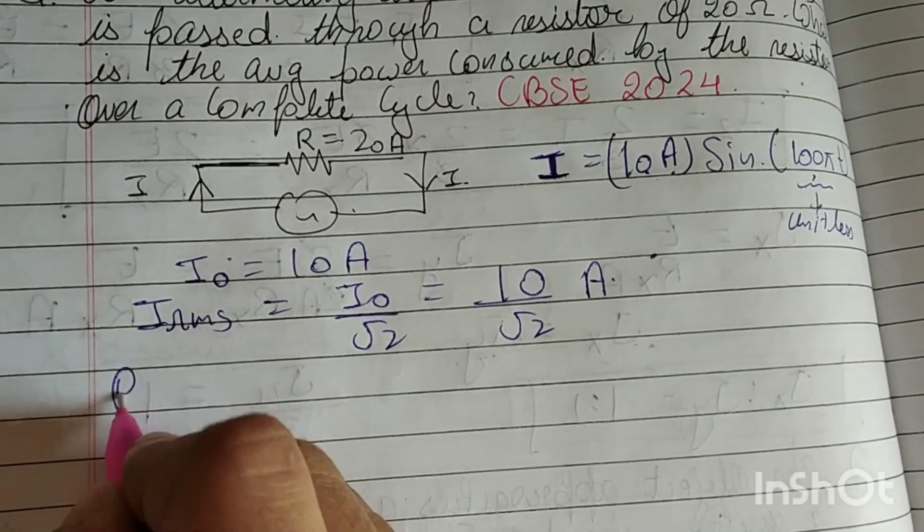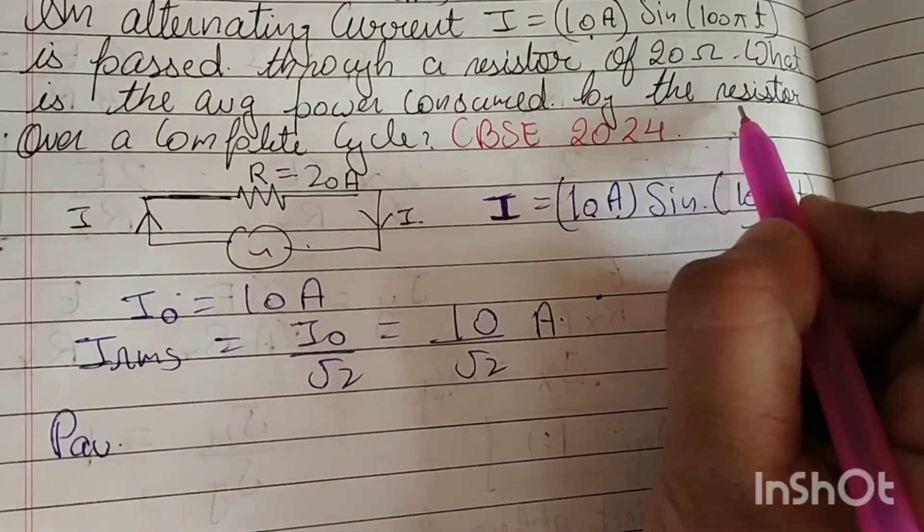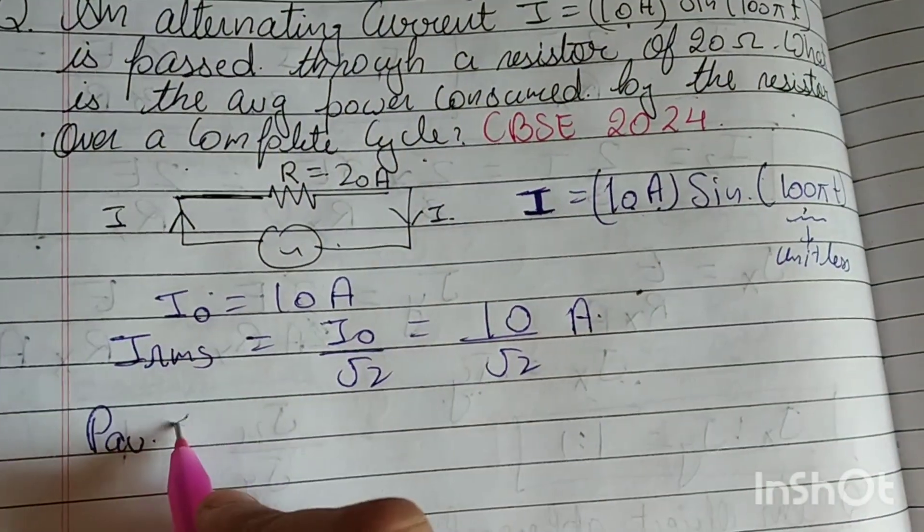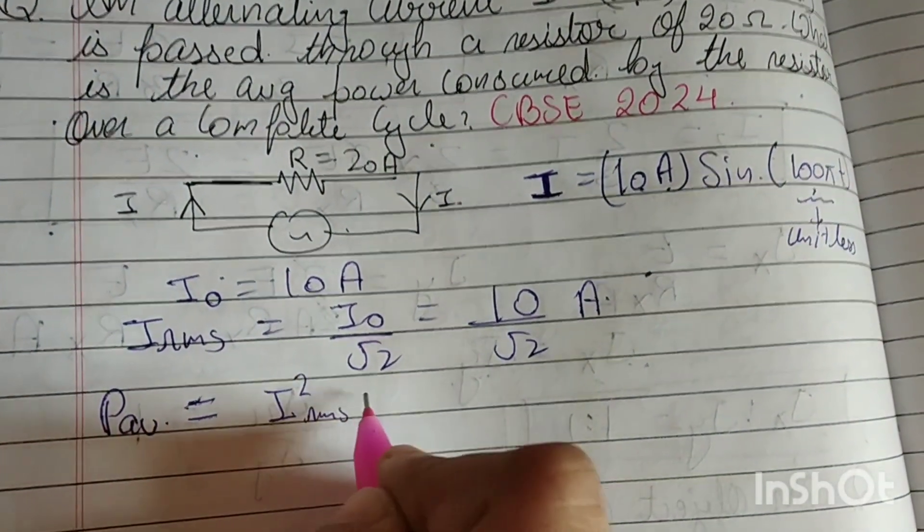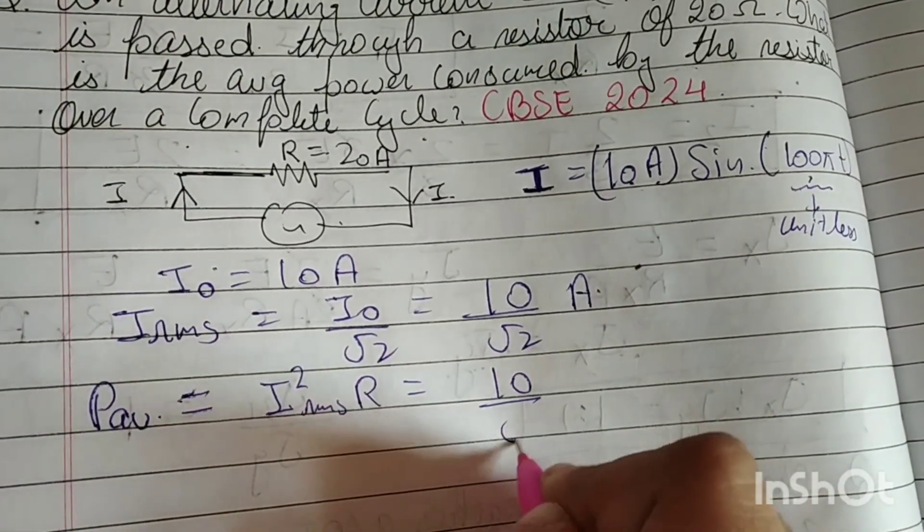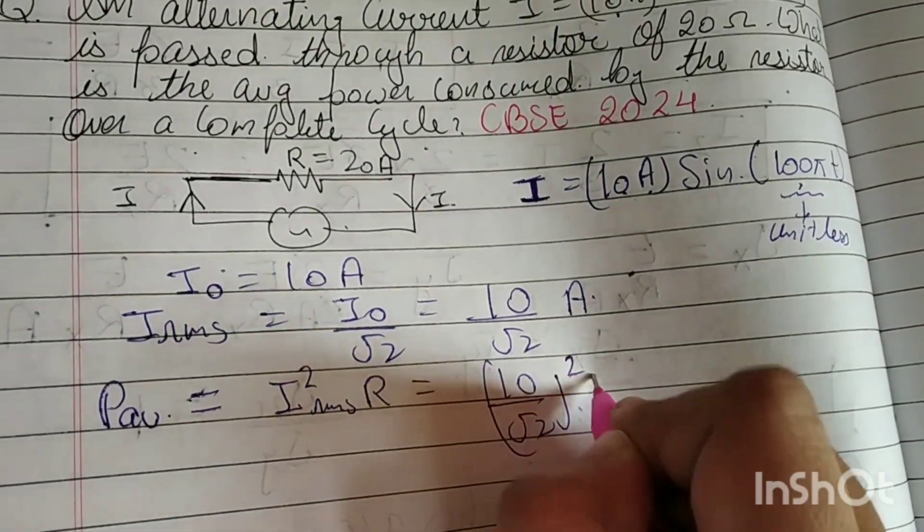Now we will find the average power over a complete cycle. The average power consumed is P_average, which equals i²_rms into R. So i²_rms value is (10/√2)² into R, and R value is 20.